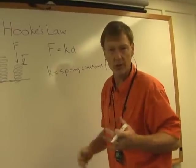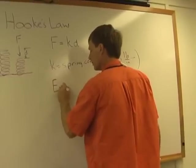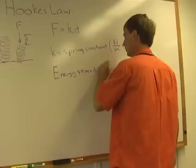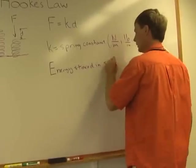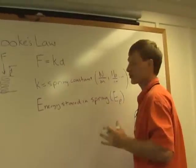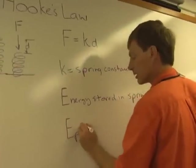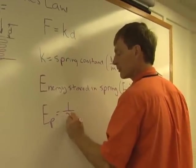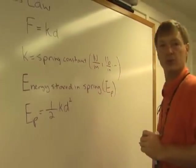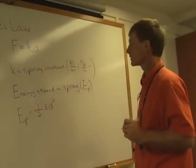And so the energy stored in the spring, we'll call it E sub P for potential energy, stored energy. The potential energy stored in the spring is one-half times the spring constant times the displacement squared, one-half kd squared.